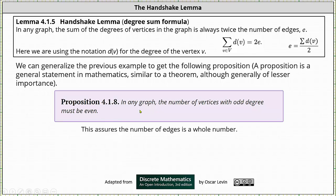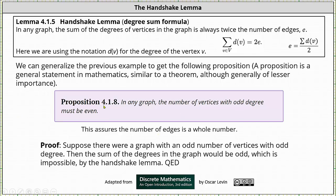This assures the sum of the degrees is even and therefore the number of edges is a whole number. And we'll end with a quick proof of this proposition. Suppose there were a graph with an odd number of vertices with odd degree. Then the sum of the degrees in the graph would be odd, which is impossible by the handshake lemma.